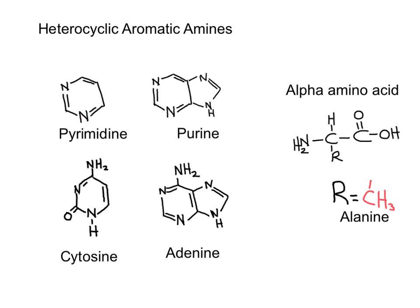Heterocyclic aromatic amines will be very important for biological systems. For example, pyrimidines and purines are part of the DNA molecules. Another important kind of amine contains more than one functional group — combined with a carboxylic acid, it is called an alpha amino acid, and those are the building blocks for the synthesis of proteins.